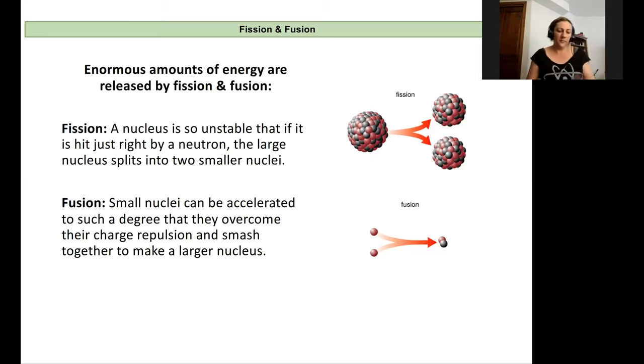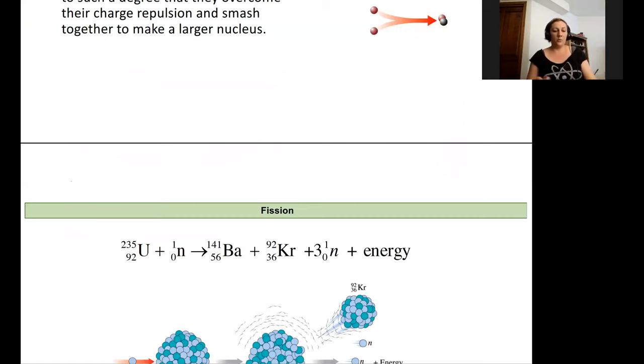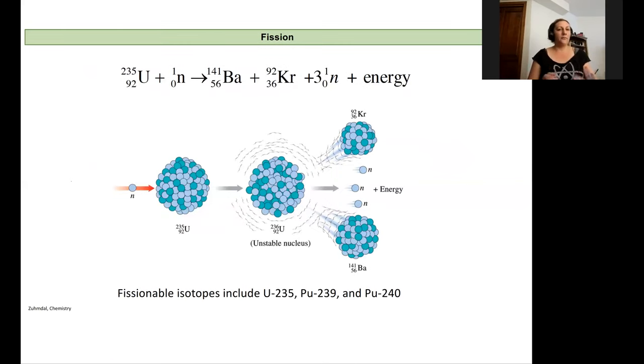We're going to focus on fission because that's something that we utilize in our daily lives. Here is an example of the fission used in nuclear reactors. Looking at uranium-235, it's a radioactive isotope, but when it's hit by a neutron it becomes extremely unstable as uranium-236 and splits apart into krypton-92 and barium-141, plus lots of energy and some neutrons are also released.